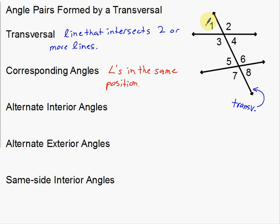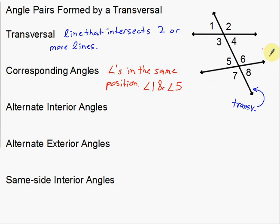Now I'm going to find its corresponding angle. Notice that angle one is up and to the left. So on this second intersection, I want to go up and to the left as well. Notice my cursor is sitting on angle five. So angle one and angle five are in fact corresponding angles — they're in the same position. There's not just one pair: three and seven are corresponding angles, two and six are corresponding angles, four and eight are corresponding angles. They're all in the same position.